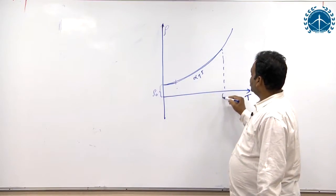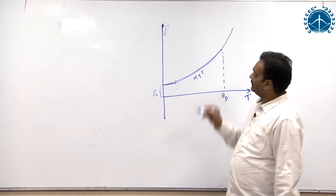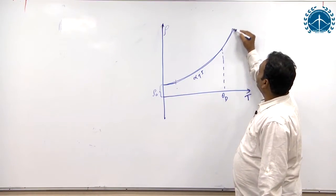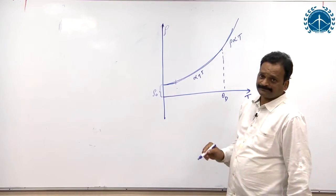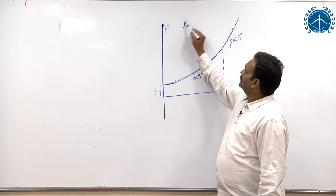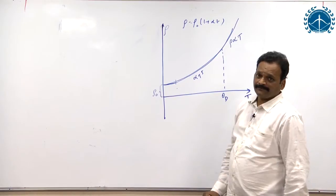At one specific temperature called near a specific temperature called Debye temperature theta D, lattice vibrations become linear and resistivity rho becomes proportional to T. That is how we have got the expression rho equal to rho naught into 1 plus alpha T.